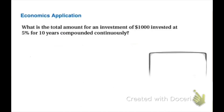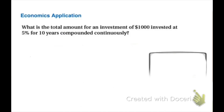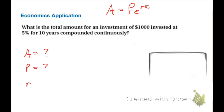An example of how we can use this: what is the total amount for an investment of one thousand dollars invested at five percent for ten years compounded continuously? We're going to use our formula APERT. What information do we have? Do we have A, P, R, and T? The question asks for the total amount, so we don't know A — that's our final amount.